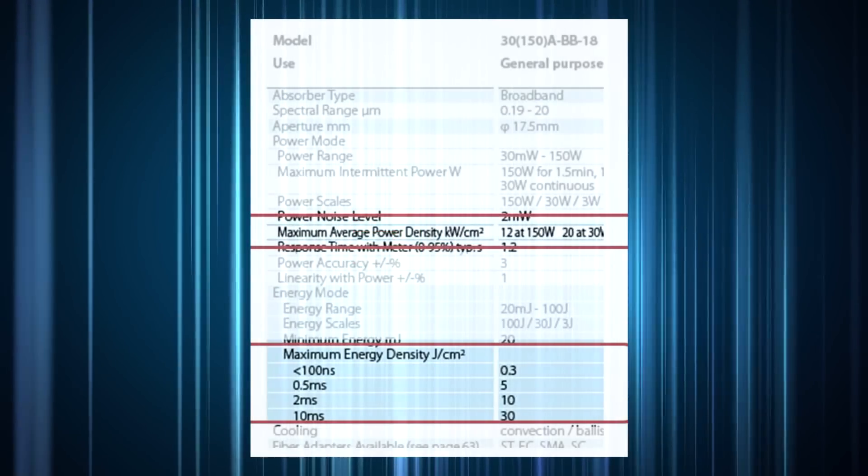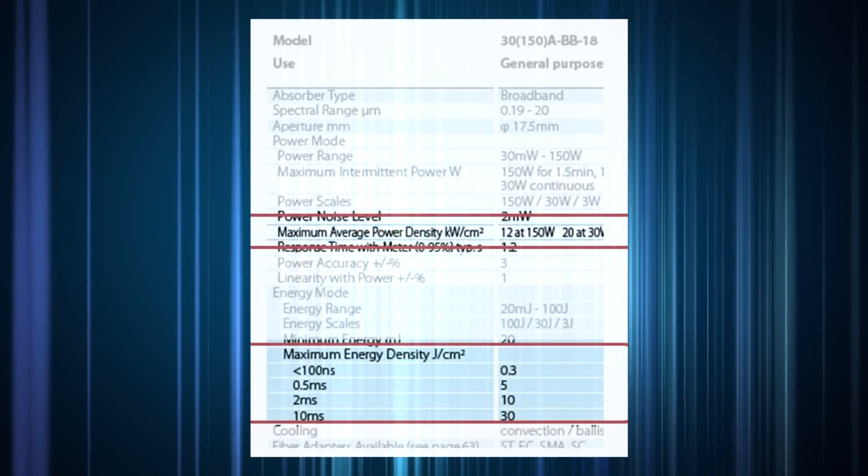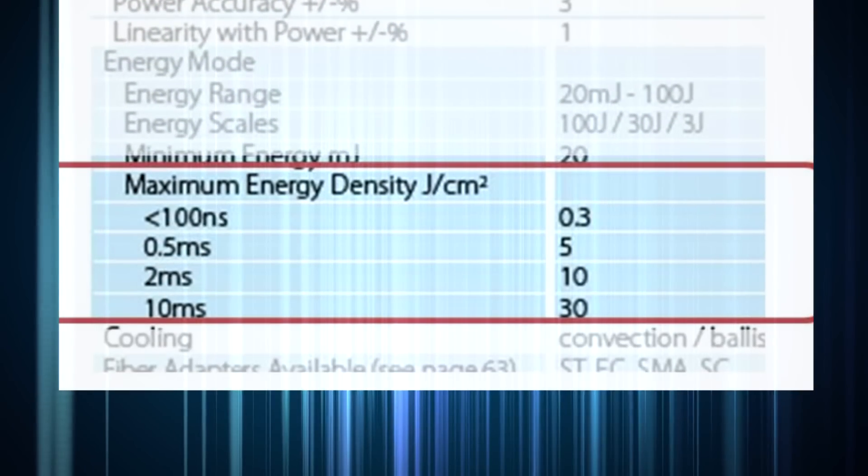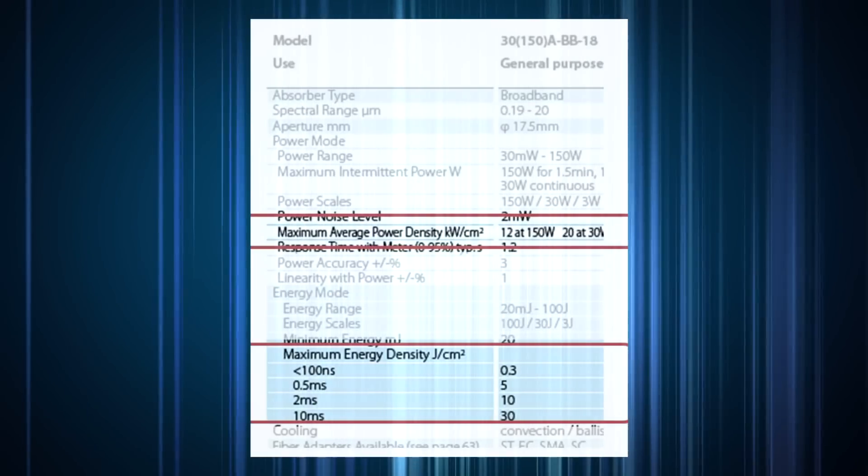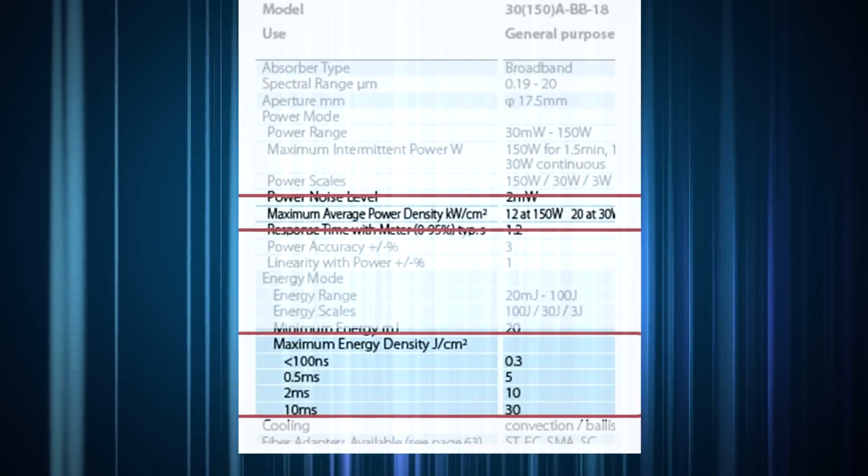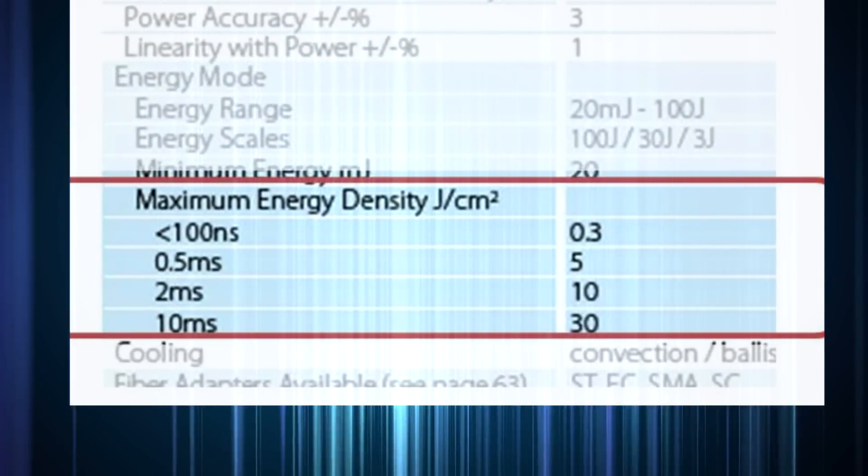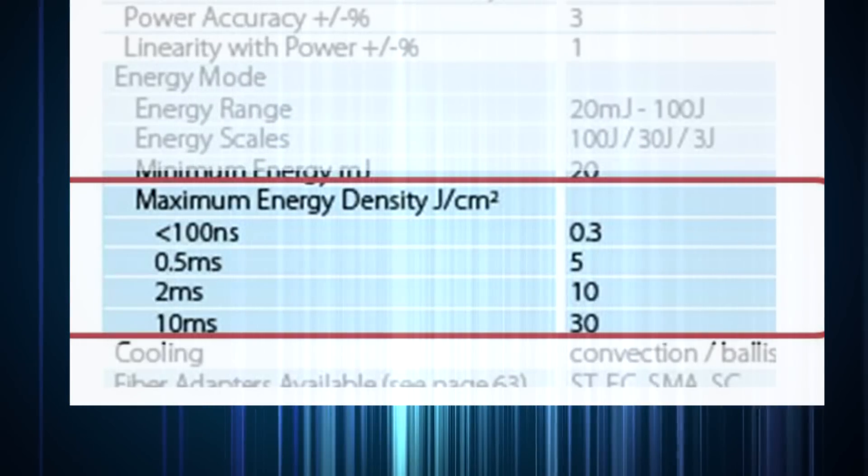If you look carefully at our sensor data sheets, you'll notice that there are two damage thresholds, maximum power density and maximum energy density. As opposed to maximum power density, which is usually a simple number in kilowatts per square centimeter, maximum energy density is usually portrayed as a table with several possible values in units of joules per square centimeter for several different pulse widths.